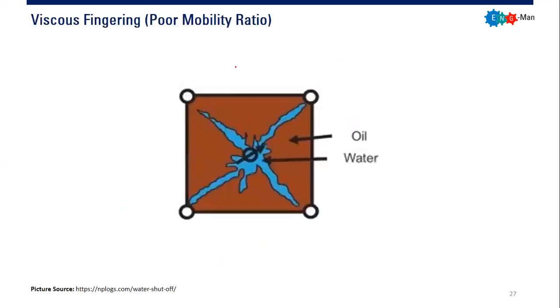The first thing is viscous fingering due to poor mobility ratio. If you have, let's say, an injector at the center of your reservoir section and you have producers there, and unfortunately you have poor mobility ratio, please remember that mobility ratio is the mobility of the displacing fluid, in this case water, divided by the mobility of the displaced fluid, in this case oil. If you have mobility ratio greater than one, it means that your water will move faster than your oil.